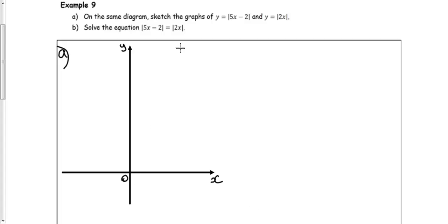So that positive section there, I'm going to leave it as it was. However, the negative section will be reflected in the x-axis and we get a graph something like this. Let's just mark on this graph. So that's the modulus of 5x take 2.